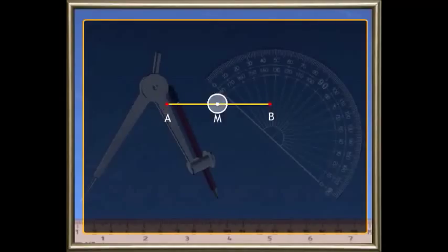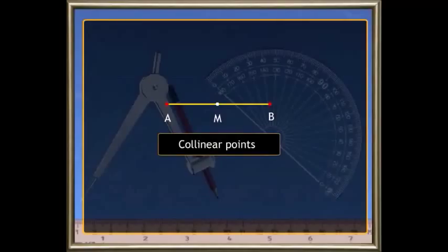Now, the points A, M, B all lie on the same line, correct? Such points are called collinear points.